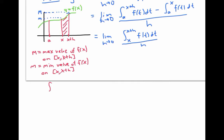Now we know that the integral of f of t dt from x to x plus h has to be less than or equal to capital M times h, and bigger than or equal to lowercase m times h. This is one of the properties of integrals, and can be verified visually by comparing this shaded red area to the small blue rectangle, which has area lowercase m times h, and comparing it to the area of the big rectangle, which has area capital M times h.